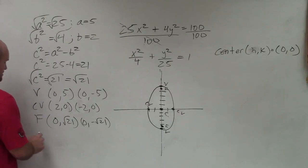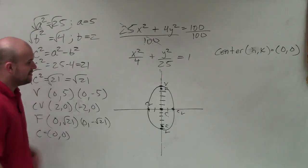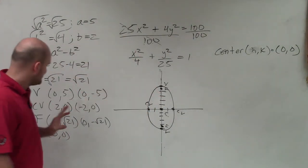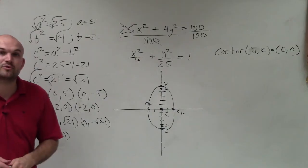And where my center is at 0, 0. So there you go, ladies and gentlemen. That is how you take an equation of ellipse, graph it, and be able to identify the major important information. Thanks.